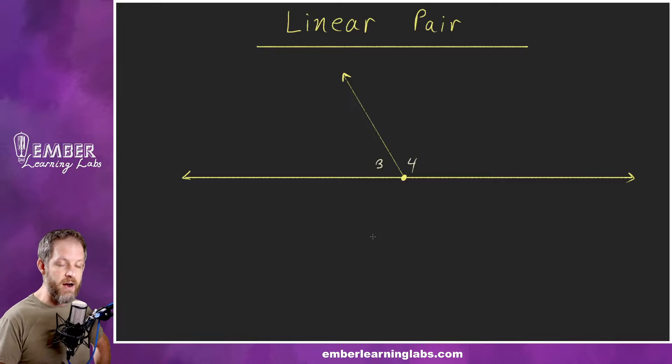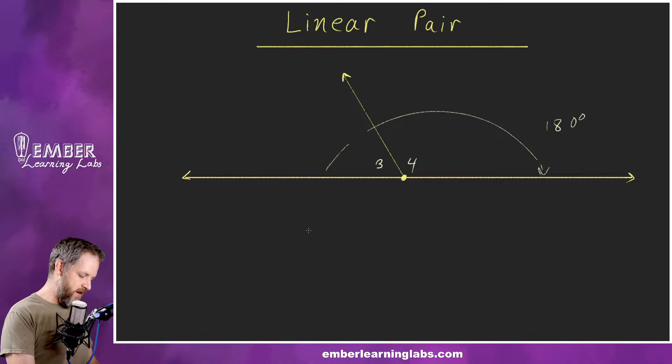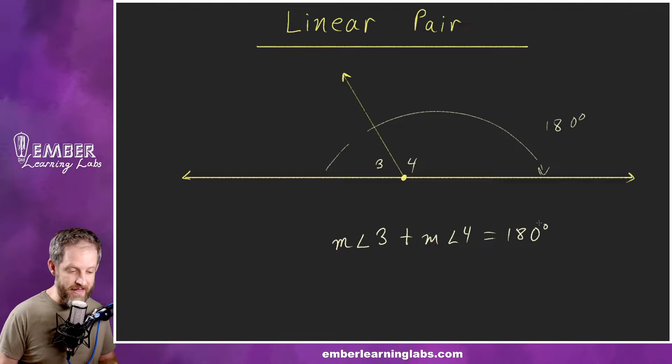So angles three and four form a linear pair. Now this is important: if two angles form a linear pair, the degree measure of an entire straight line, in case you didn't know, is 180 degrees. So it stands to reason that a linear pair adds up to 180 degrees. We would say the measure of angle three plus the measure of angle four is 180 degrees.